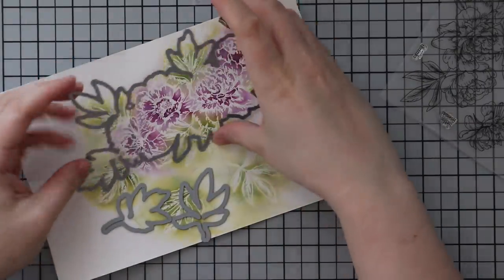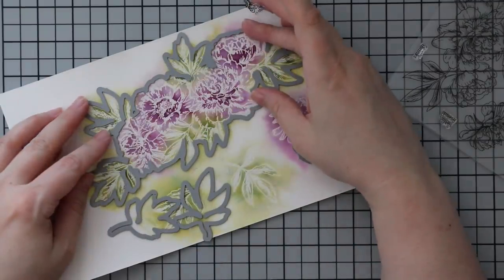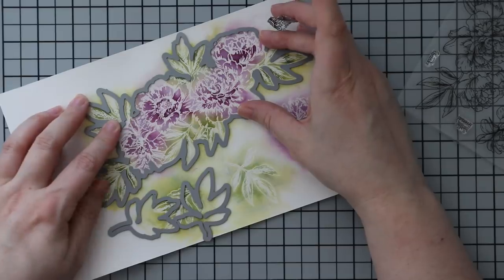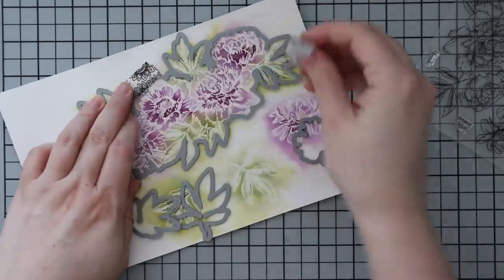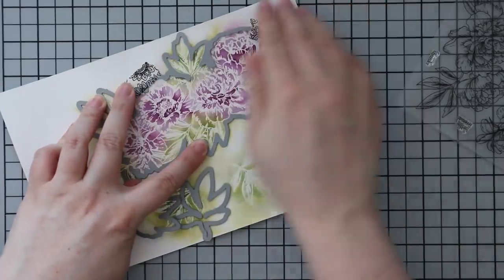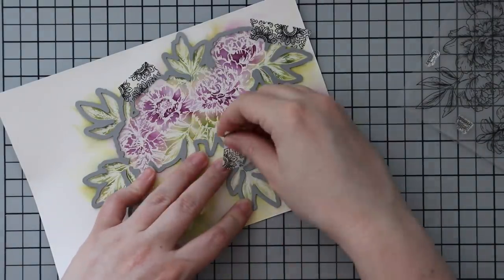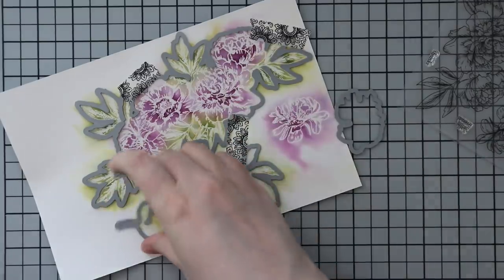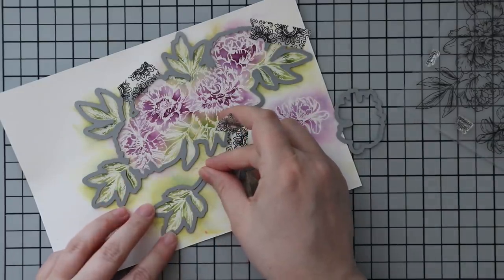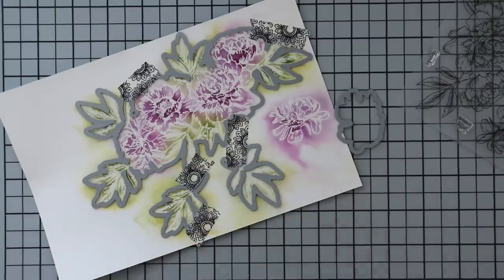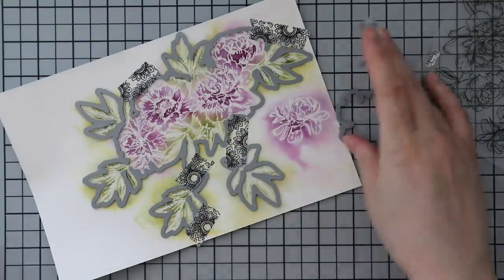After everything's completely dry, you always want to make sure before you start die cutting because you can easily tear or shred the cardstock. I'm using the coordinating wafer dies to die cut out these images. I ended up stamping and embossing to use up the rest of the watercolor paper because it had some splatters on it.